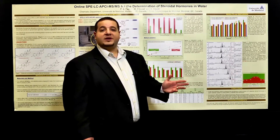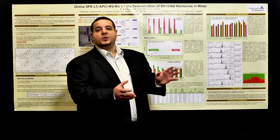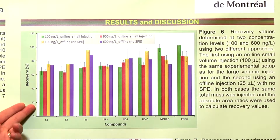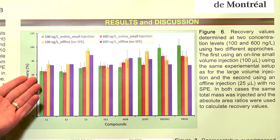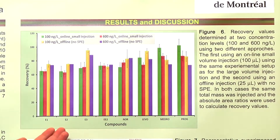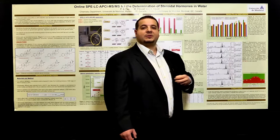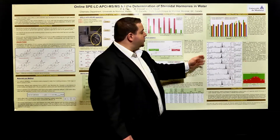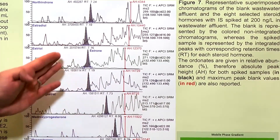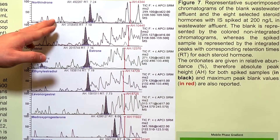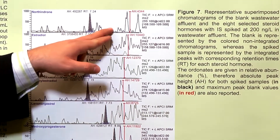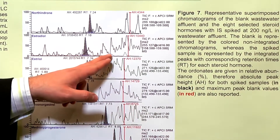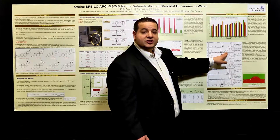We also tested recovery, which is important because higher mass recovery allows us to lower limits of detection — we aim for 100% recovery. As shown in Figure 6, recovery values tested across two different methods and two different concentrations are globally between 65 and 100% for the different compounds. Estrogens show slightly less recovery than the progestogens, which is expected since they are slightly more polar. We also show the chromatogram demonstrating that our peaks are separated from matrix interferences — superimposed chromatograms of our blank versus our peaks — showing we can move peaks away from the matrix, reducing interferences and suppression.